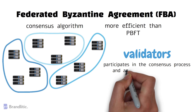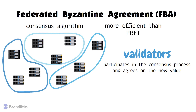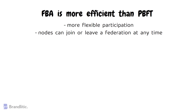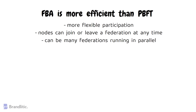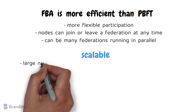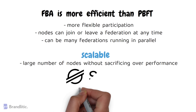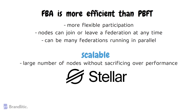The validator then participates in the consensus process and agrees on the new value. FBA is more efficient than PBFT because it allows for more flexible participation in the consensus process, and nodes can join or leave a federation at any time. There can also be many federations running in parallel. One of the main benefits of FBA is that it's scalable, meaning it can handle a large number of nodes without sacrificing performance. FBA is used in several blockchain projects, including the Stellar Network, which is known for its fast and low-cost transactions.